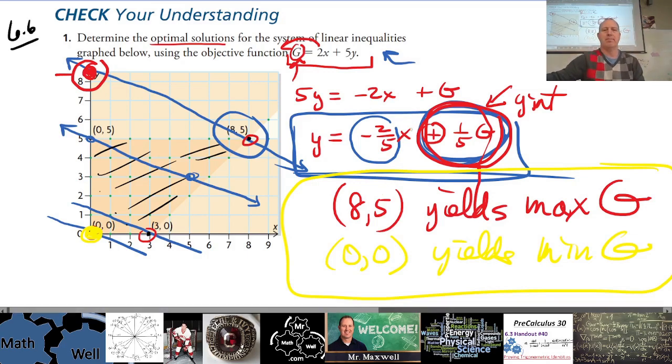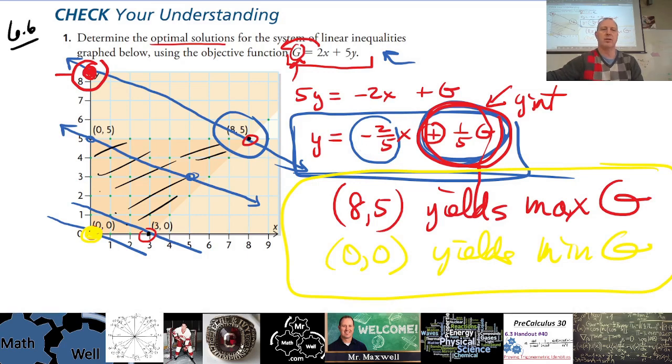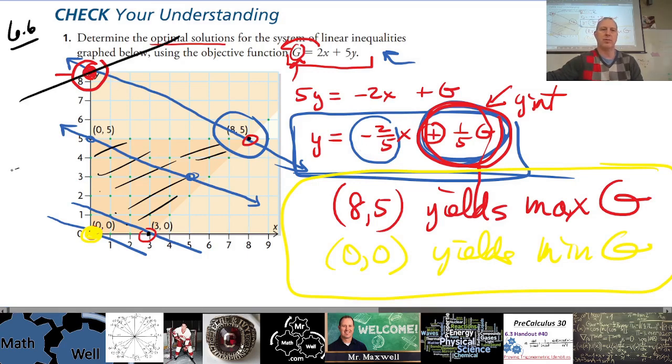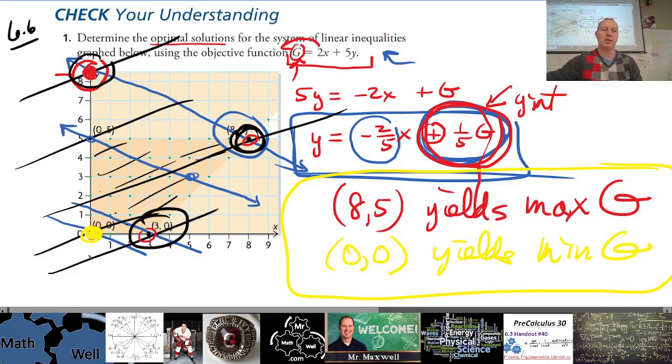If this was positive, then you would have lines that would run positive, it would be like this. This is what the lines would look like now. Then what you would see, if that were the case, is that this point still has the maximum, but then you would see that this point has the minimum because it's the lowest line. You see, so (3,0) would have the minimum if that was the case, if this was a positive slope.